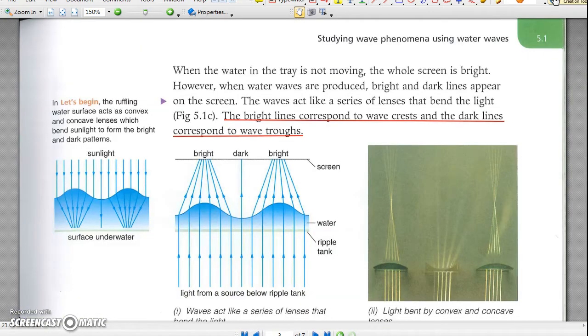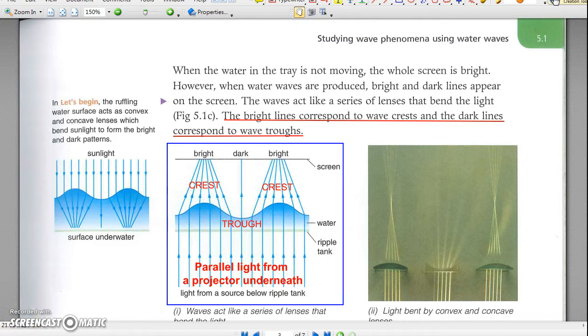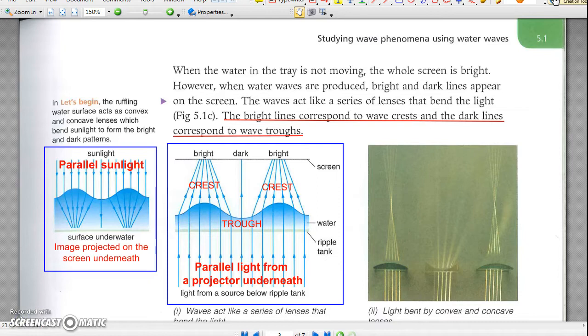When water waves are projected on the screen, the crests act as convex lenses and troughs act as concave lenses. A line of crests converges the parallel beam from below and produces bright light on the screen. A line of troughs diverges the light and produces dark areas. Let's take a look at the video.